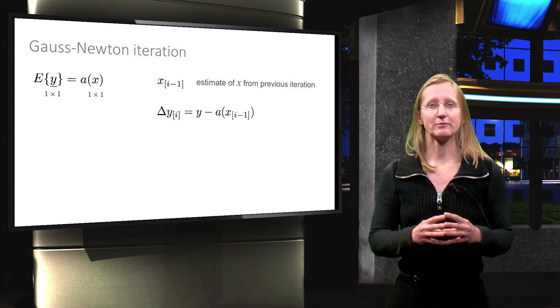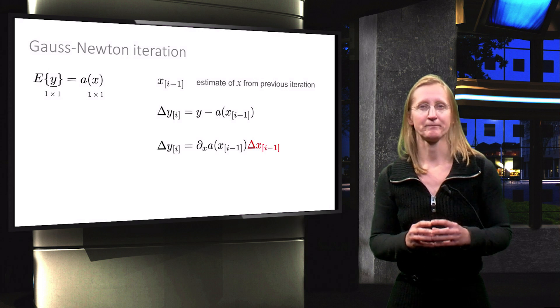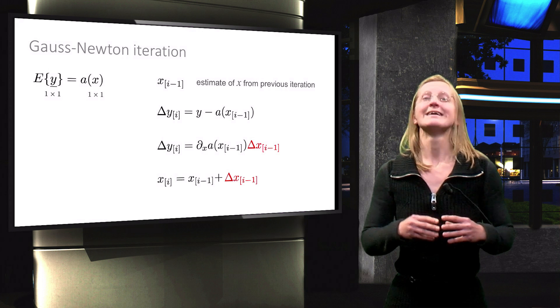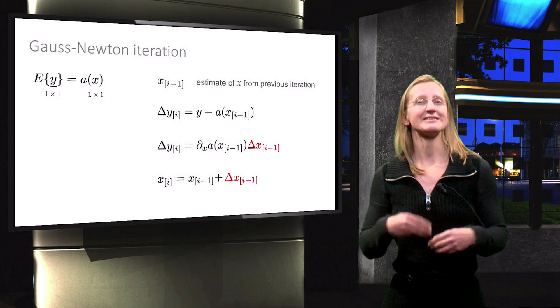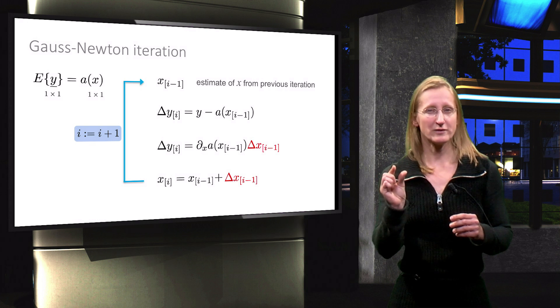Then delta x can be computed based on the linear approximation of the function a. And finally a new approximation for x can be obtained. This new approximation is used in the next iteration, which continues until delta x becomes very small.